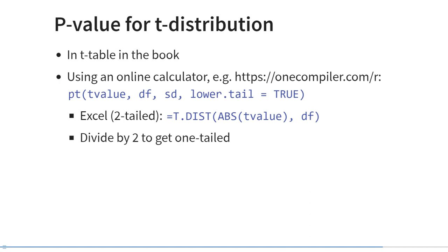We then need to find a p-value from the t-distribution. We can use the t-table in the git book or any other statistics book, or use an online calculator or R. In R, we use the function pt — the probability from the t-distribution — based on a specific t-value and a certain number of degrees of freedom, with lower.tail=TRUE for the lower tail probability and lower.tail=FALSE for the upper tail probability. We can also use a spreadsheet like Excel, which gives the two-tailed t-probability using the TDIST function for the absolute t-value and a specific number of degrees of freedom. For a one-tailed probability, divide by two if the effect is in the hypothesized direction.